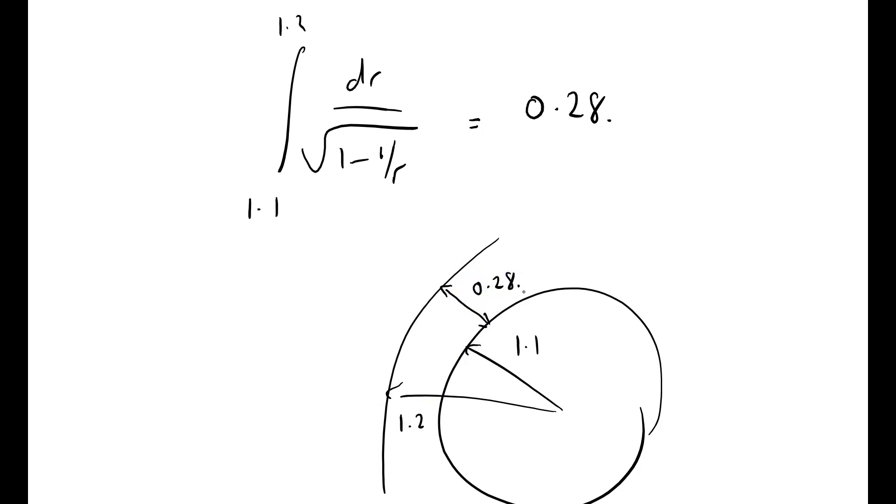And of course, that cannot happen in flat space. Because in flat space, the radius, that distance there is going to be 0.1 in flat space, and here it's nearly three times higher than that because of this non-linear integral. Space is not flat in the vicinity of a black hole, and I'm going to stop there.